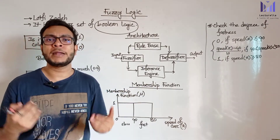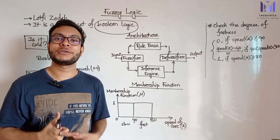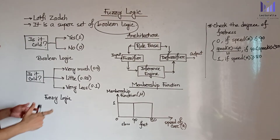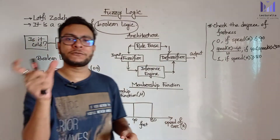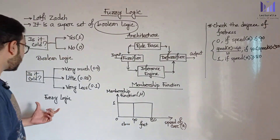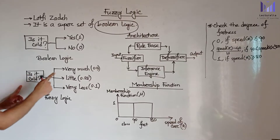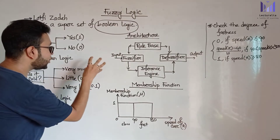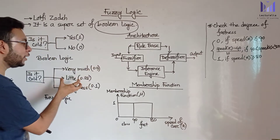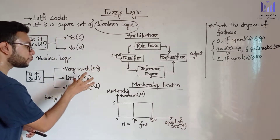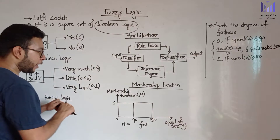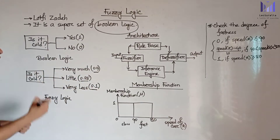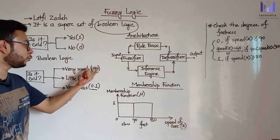For this type of reasoning and representation, Boolean logic will fail. That's why we use fuzzy logic, because fuzzy logic can represent the degree of something. For example, 'Is it cold? Yes, very much' can be represented as 0.9; 'a little' as 0.25; 'very less' as 0.1.